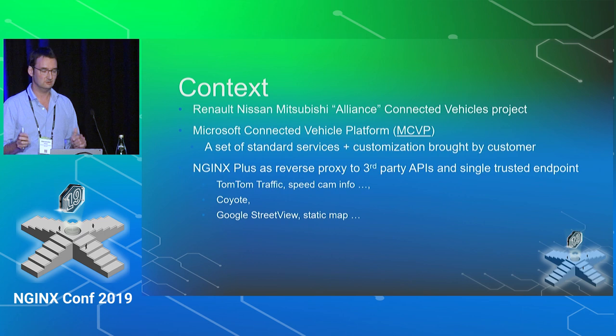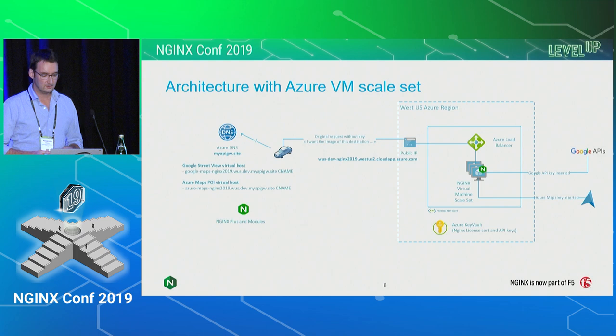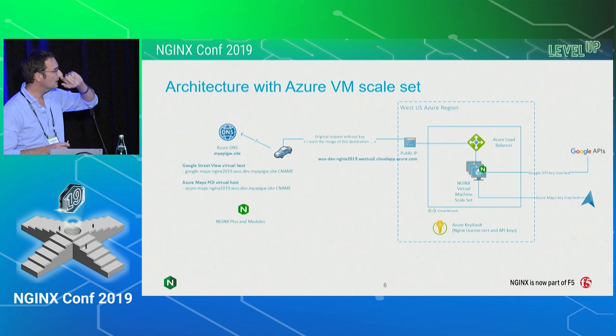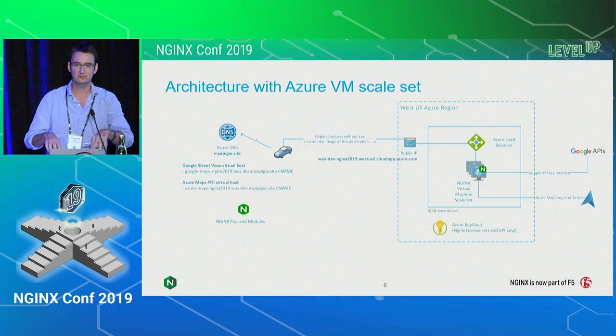This is the architecture we have in our sample. The car in the middle will be simulated by my computer using Postman or Insomnia. We have Azure DNS — I bought a domain name for the conference, my-api-gateway.site. The sample will query Google Street View to retrieve an image, or Azure Maps POI, which will give you the address of a photographer in this example.